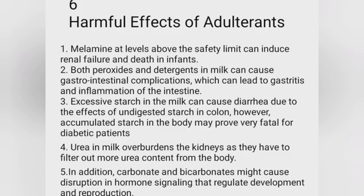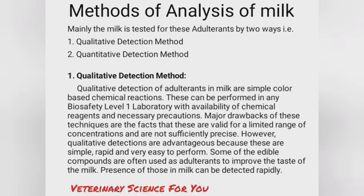Accumulated starch in the body may prove very fatal for diabetic patients. Fourth, urea in milk burdens the kidneys, as they have to filter out more urea content from the body. Fifth, addition of carbonates and bicarbonates might cause disruption in hormone signaling that regulates development and reproduction.